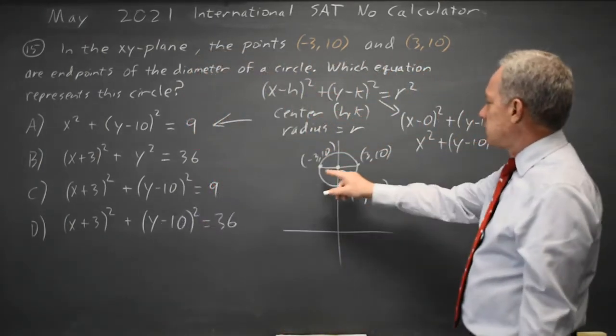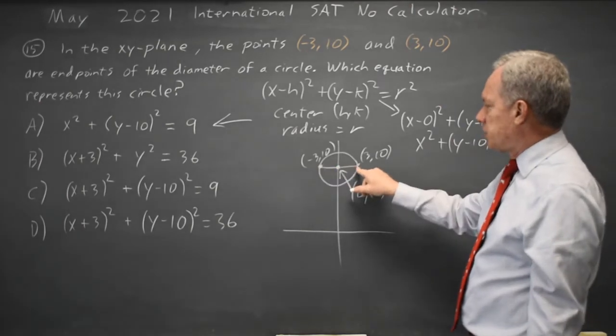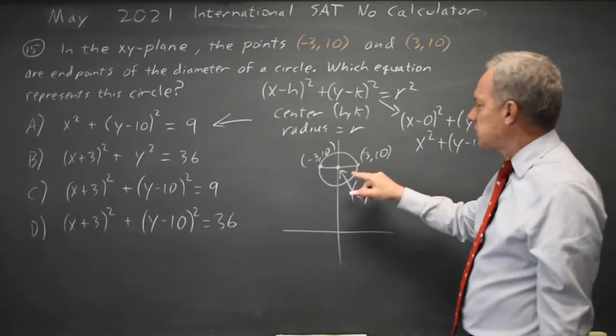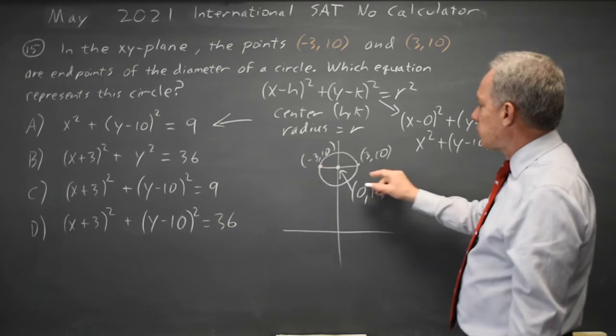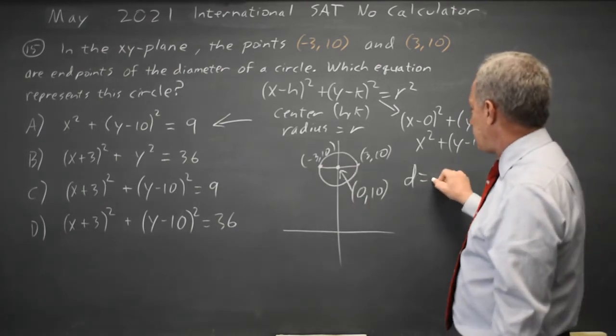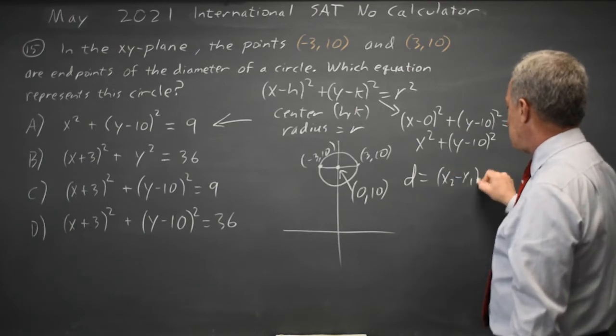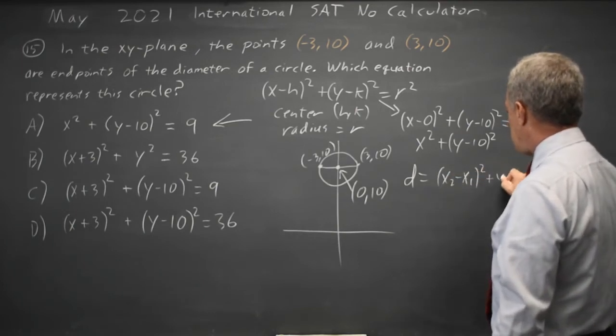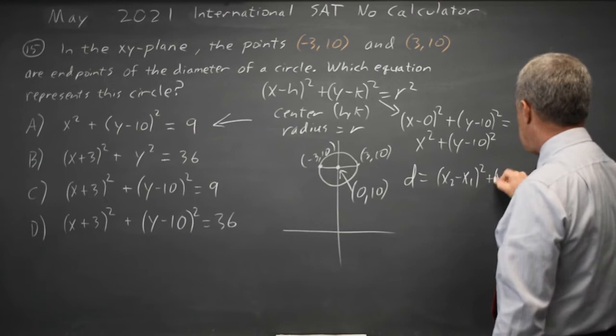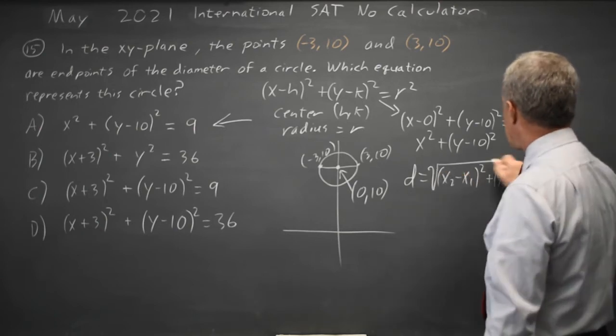But let's find the radius. The diameter is the distance between these two points. The distance formula, if I wanted to do the hard way, is x2 minus x1 squared plus y2 minus y1 squared. Take the square root of that whole thing.